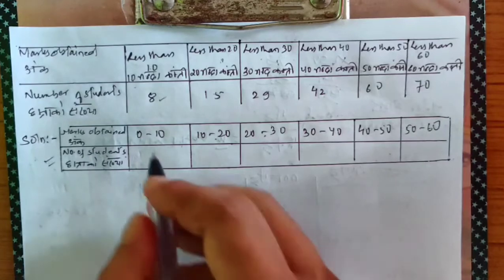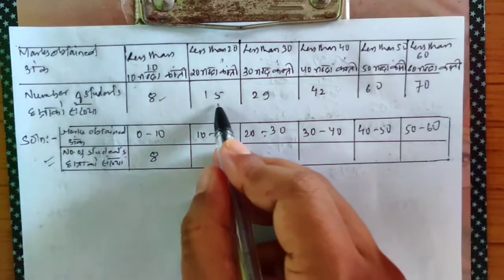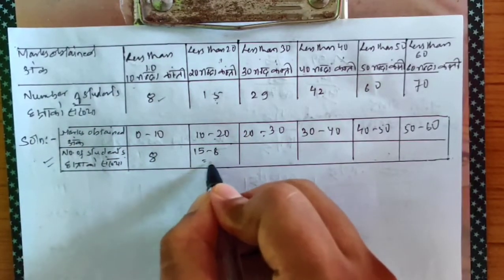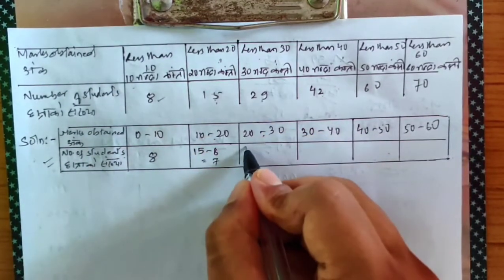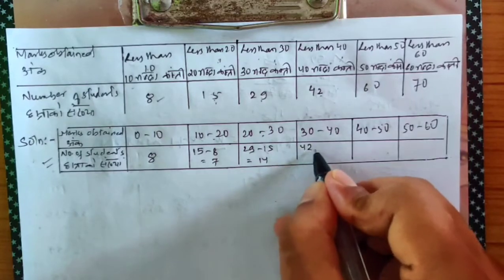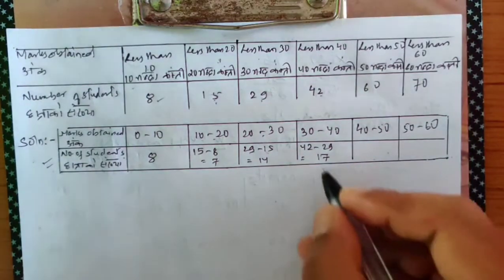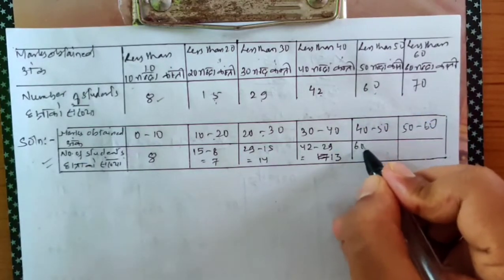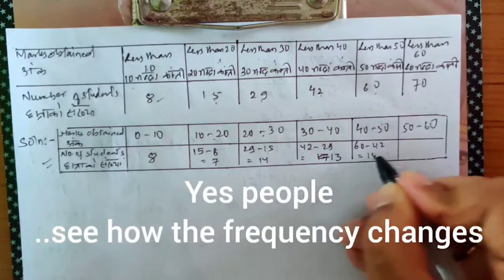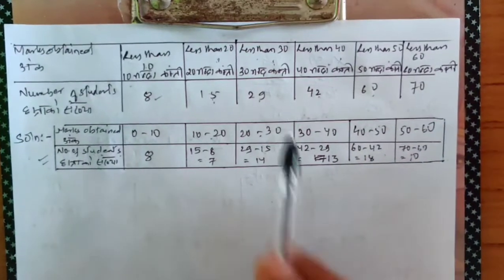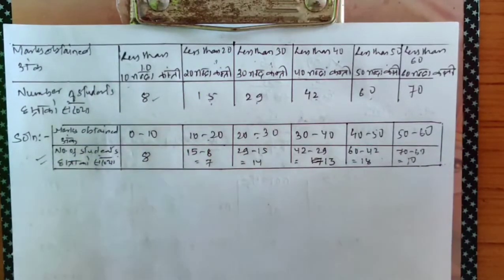The first frequency does not change. The second frequency becomes 15 minus 8. The next becomes 29 minus 15 = 14. Then 42 minus 29 = 13. Then 60 minus 42 = 18. Then 70 minus 60 = 10. Your less-than type table has now been converted into a simple table.